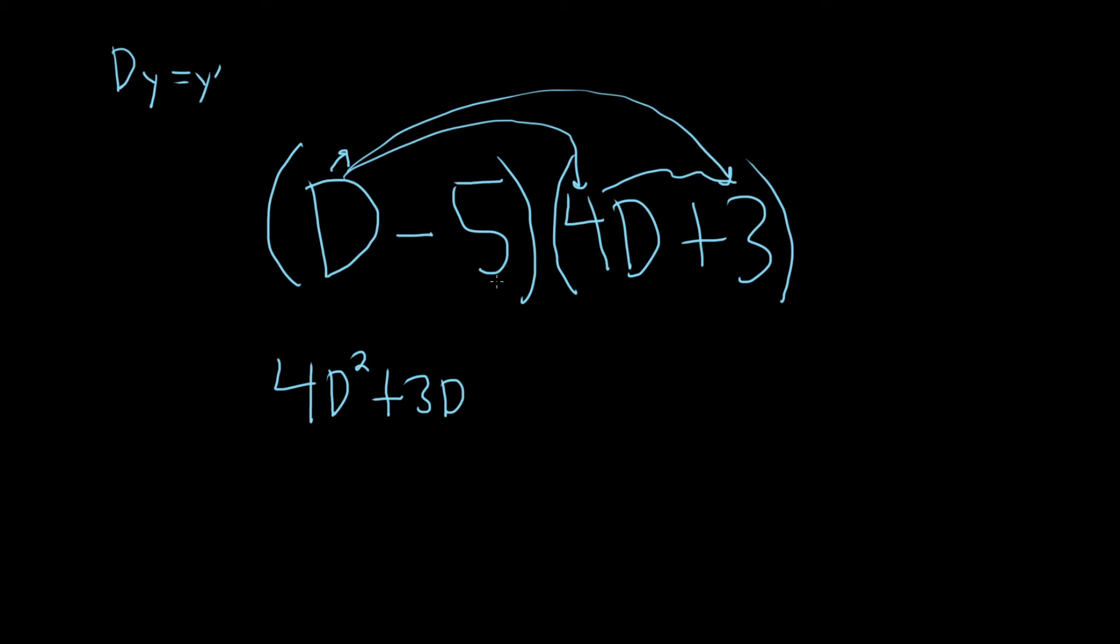And then you just do it the other way. Take the negative 5 and distribute it here. So it'll be minus 20D. And then negative 5 times 3 is minus 15.